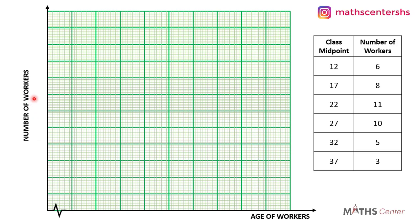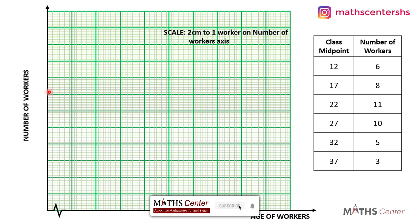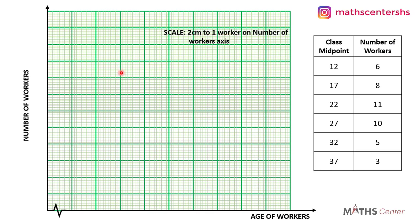We will have to choose a scale for the vertical axis by looking at the values and choosing a scale such that our graph covers as much space as possible. I'm going to choose a scale of 2 cm to 1 unit on the vertical axis. The unit here is the number of workers, so our scale will be 2 cm to 1 worker on the number of workers axis. Using this scale we can number the vertical axis. The next thing is to choose the width of the bars, making sure all six bars fit on the graph sheet.